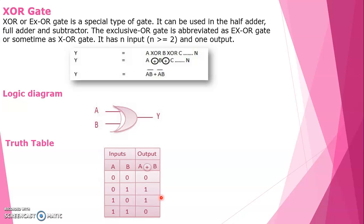In the XOR gate, for inputs A and B, you compute A bar·B and A·B bar. You will get 0,1,1,0 — so 0+0=0, 0+1=1, 1+0=1, and 1+1=0.